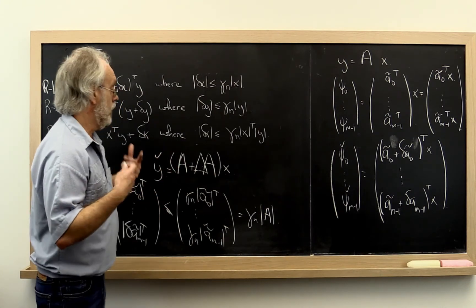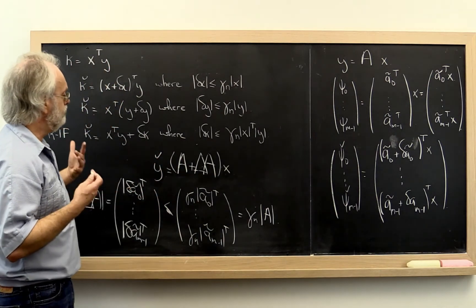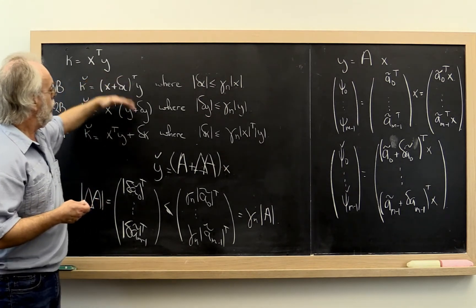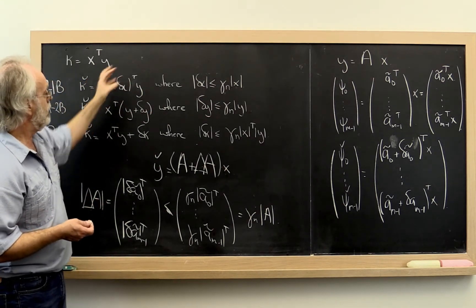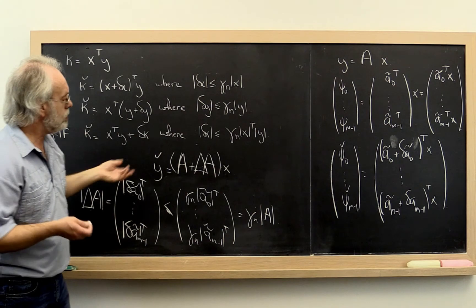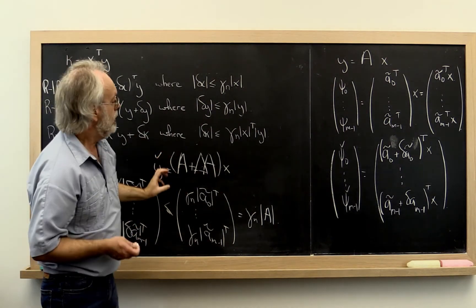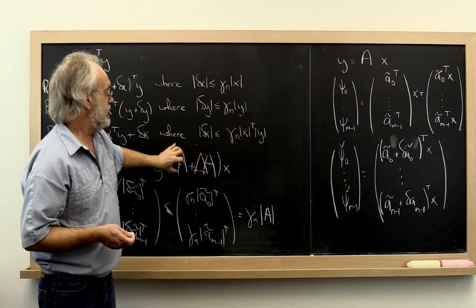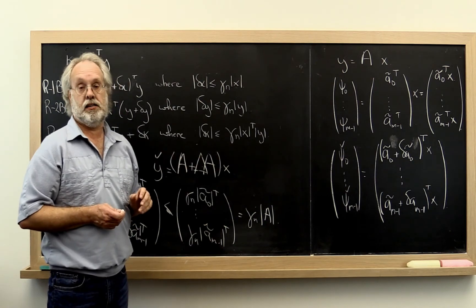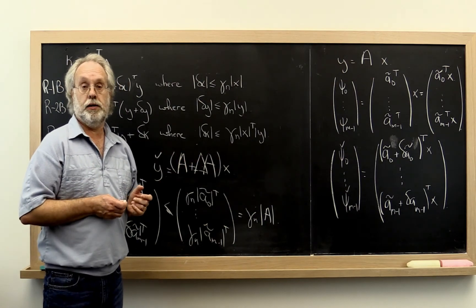And in the homework, we're going to make you think about, just like here we threw the error onto x, we threw the error onto y. I wonder if we can take all of our error and throw it onto x so that it's A times x plus some delta x. And we're going to make you think about that a little bit.